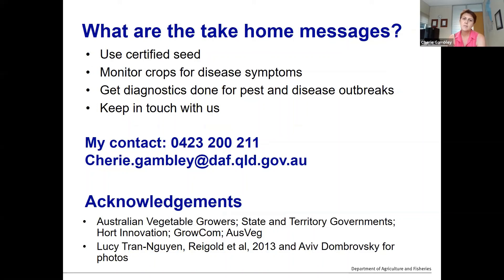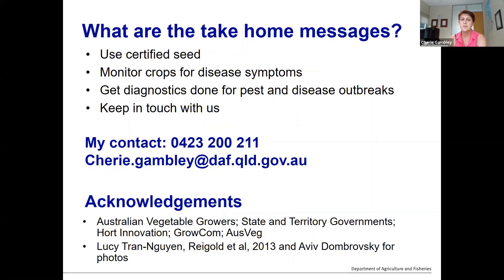The take-home message is: use certified seed, monitor your crops for disease symptoms regularly, get diagnostics done regularly so you know what you have, and keep in touch with us. You can contact me or anyone in the department — regional DPI offices are good to go through as well.